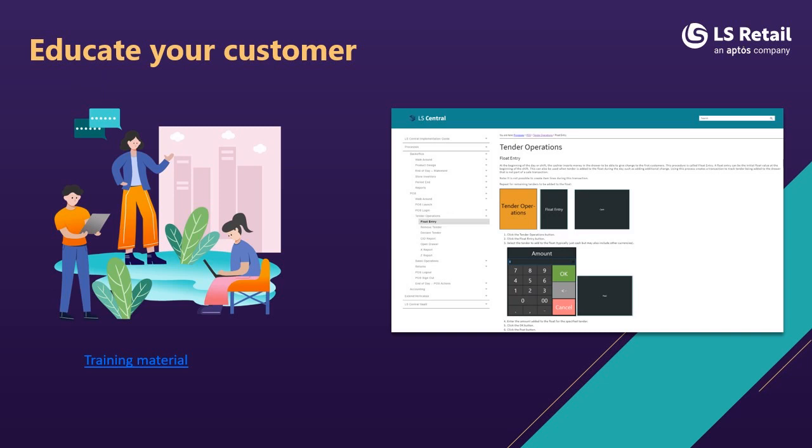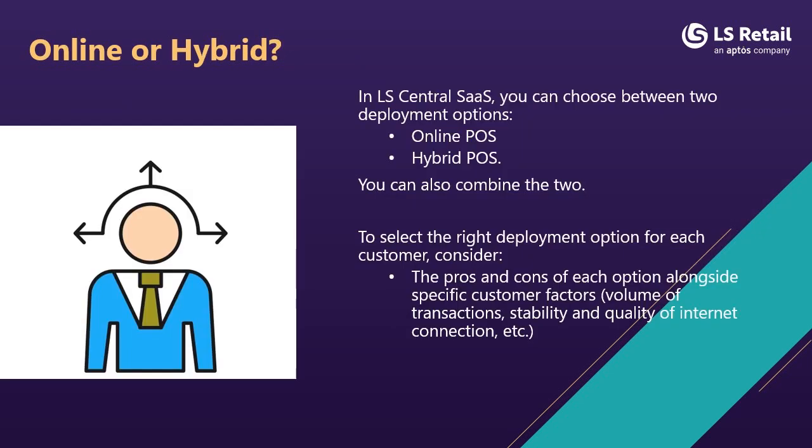Here is a link to training material in the implementation guide where you can see an overview of the most common processes within LS Central, which you can use to train your consultants or end users. In LS Central SaaS, you can choose between two deployment options: the online POS or the hybrid POS. You can also combine the two. The first option should always be to go online with the POS, but if your customer is in a region where the internet is unstable, or if you have a high transaction volume like in a supermarket, we would recommend the hybrid option.